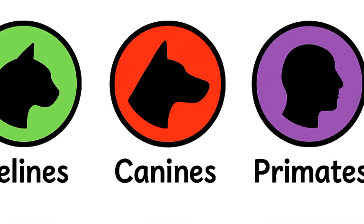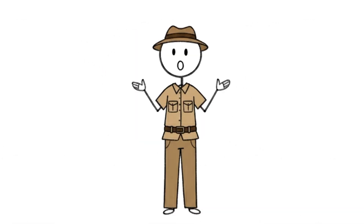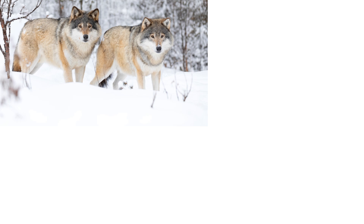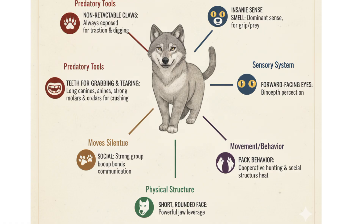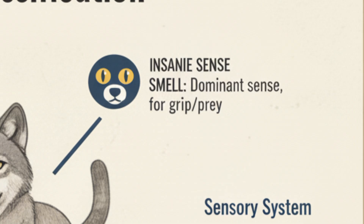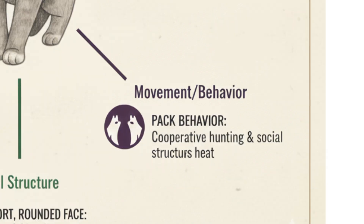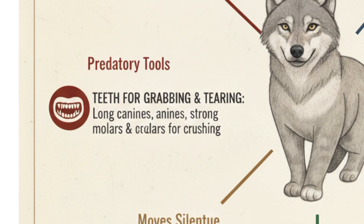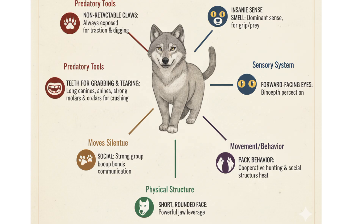Canines — the 'I got your back' squad. Wolves, dogs, foxes, jackals. How do you classify a canine? If an animal has a long snout, non-retractable claws, insane smelling abilities, social pack-style behavior, and teeth made for grabbing and tearing — it's a canine.